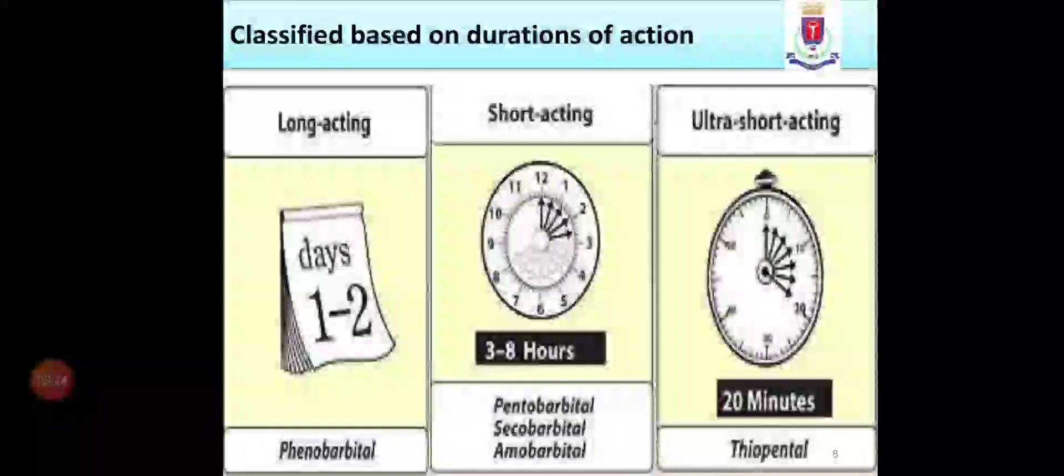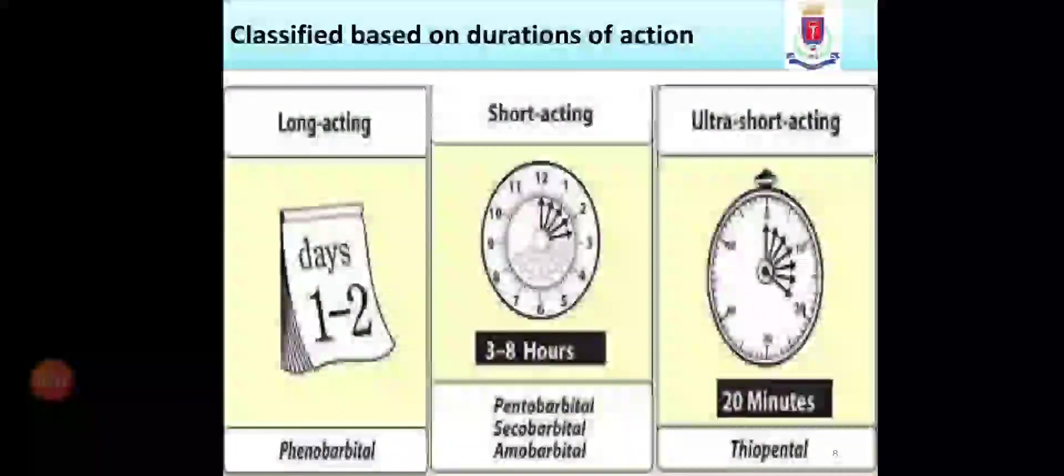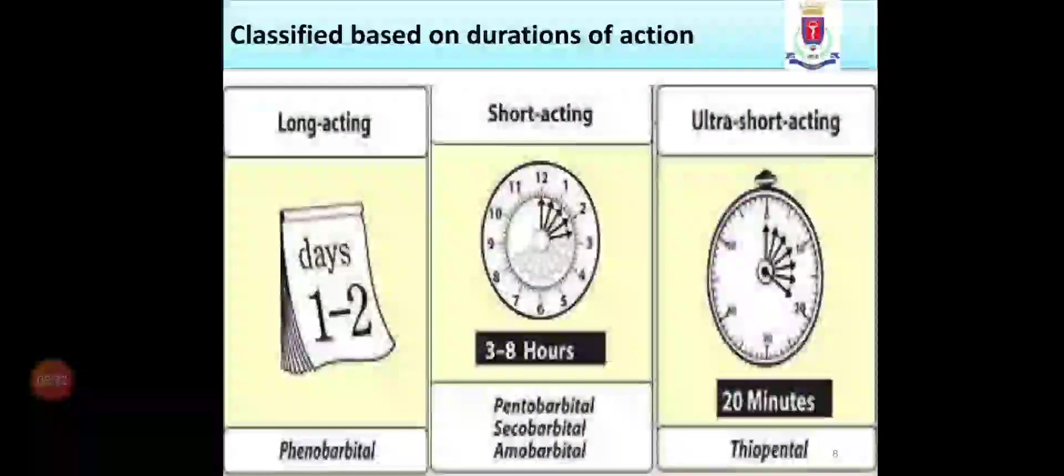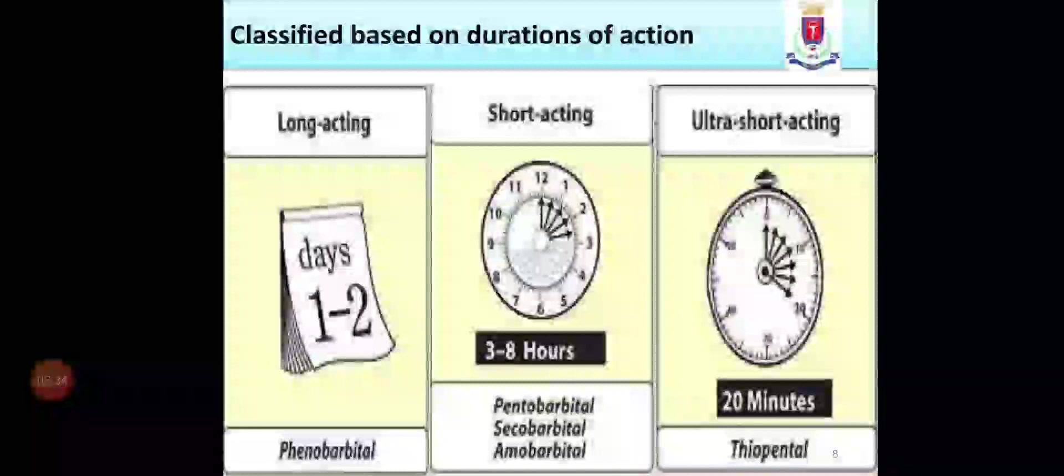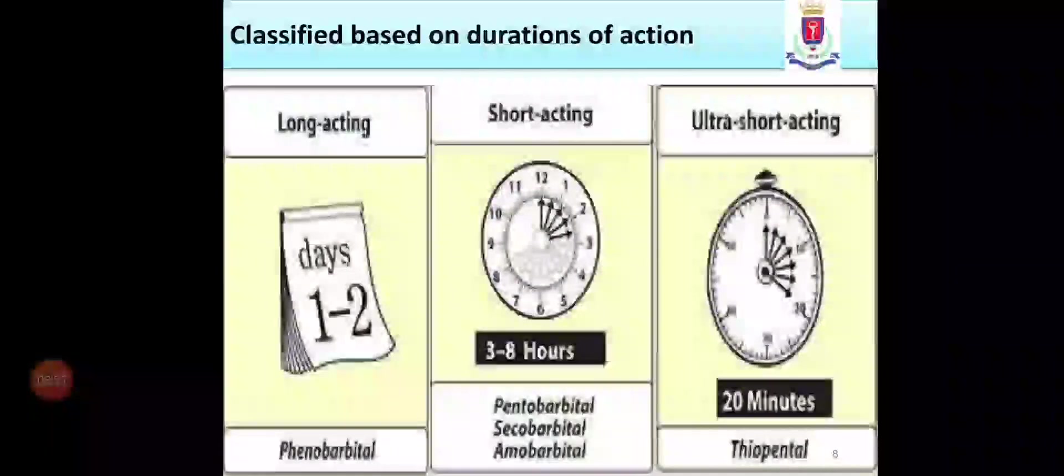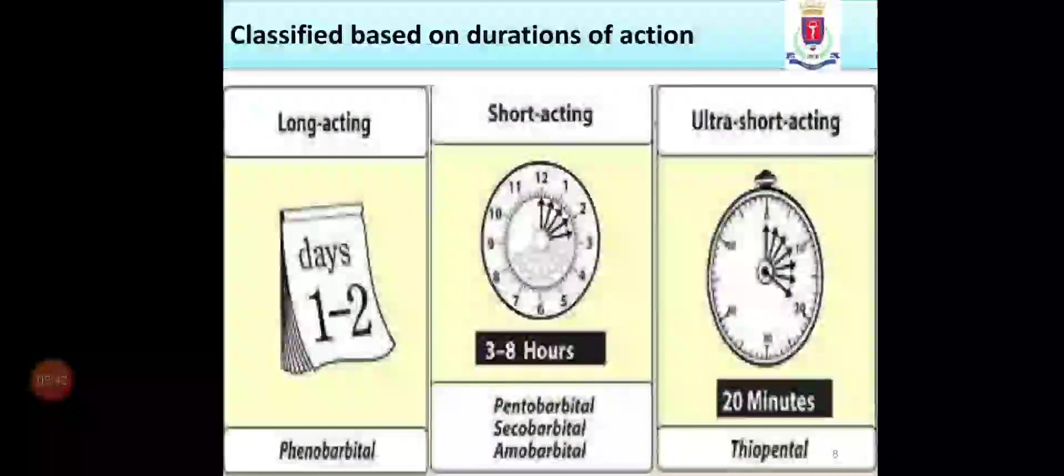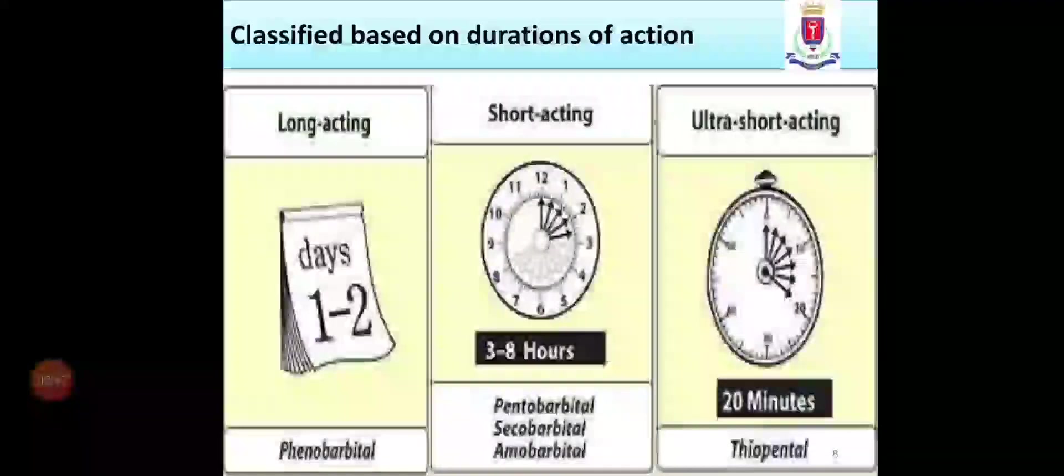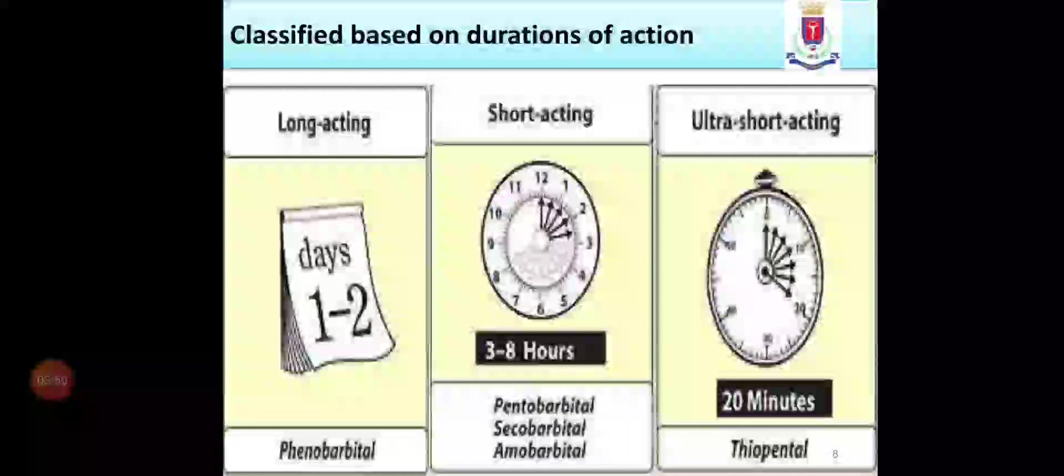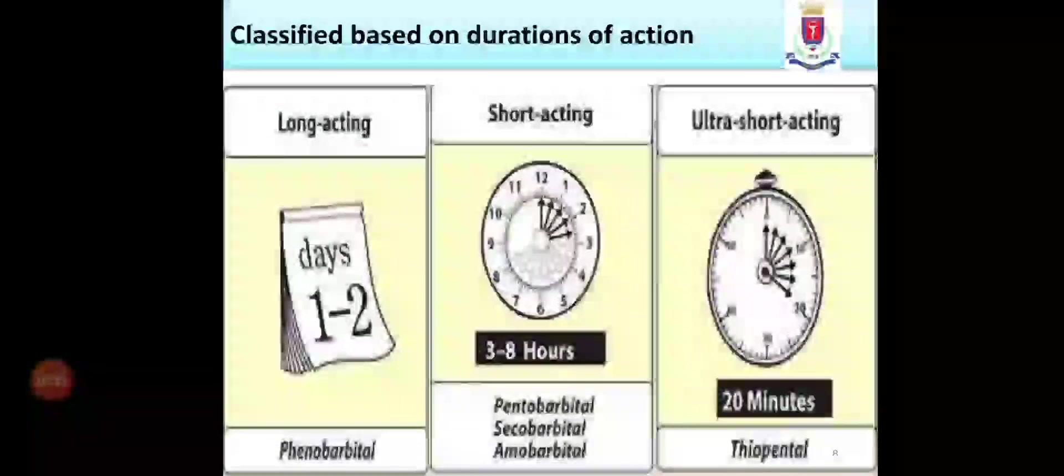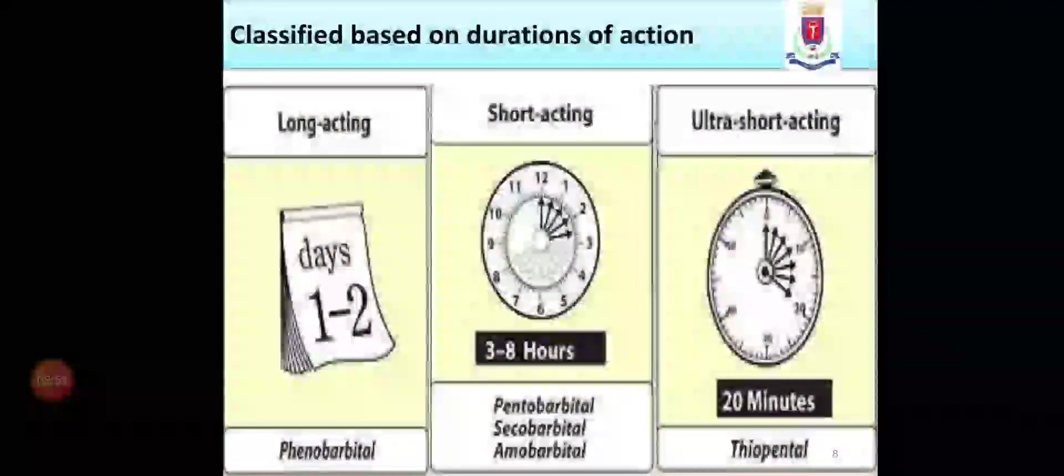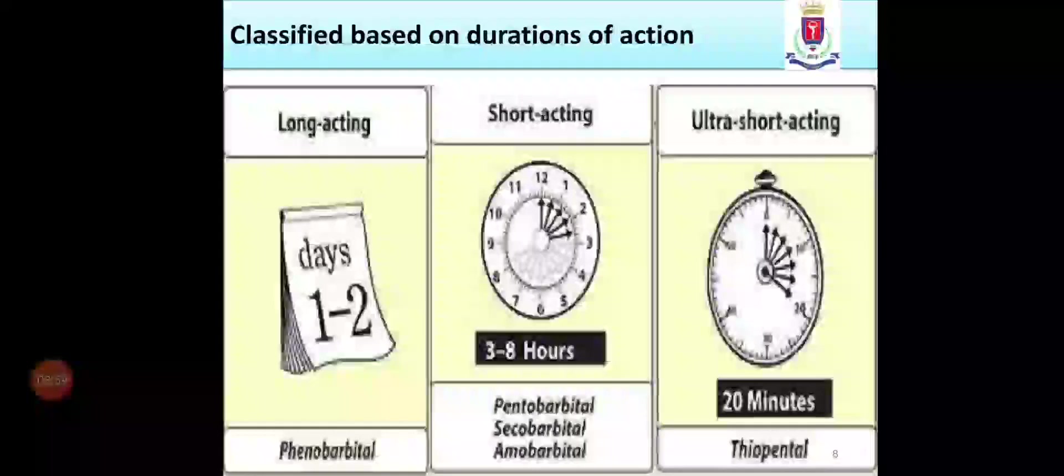The barbiturates are classified based on the duration of actions. The barbituric acid or barbiturates are further classified into three classes. First is long-acting barbiturate, example is phenobarbital, second is short-acting barbiturate, example is pentobarbital, secobarbital, amobarbital, and last is ultra-short-acting barbiturate, example is thiopental. The long-acting barbiturates, the action is for one to two days required. For short-acting, three to eight hours. And ultra-short-acting, the 20 minutes action is there. Duration of action is 20 minutes.